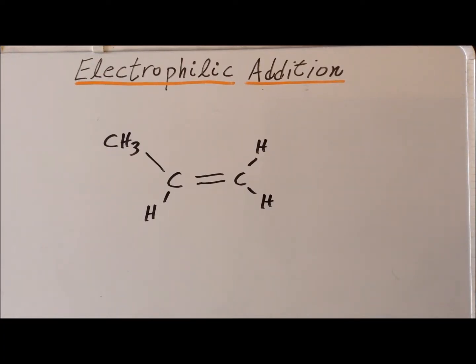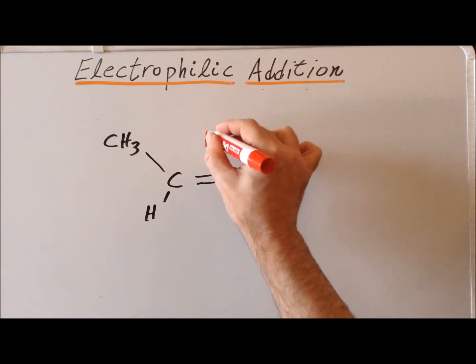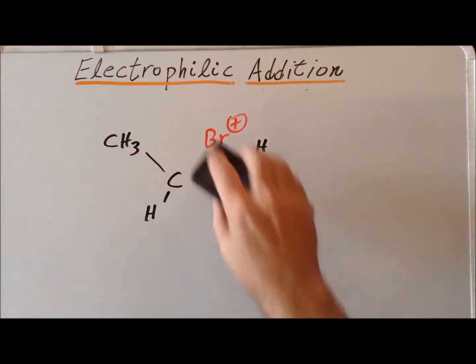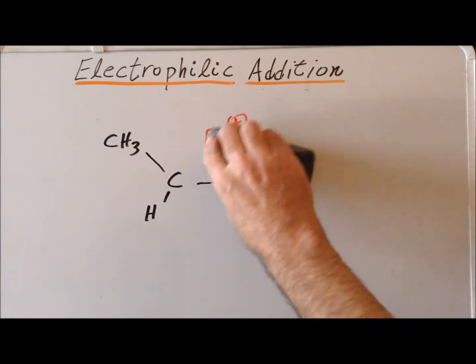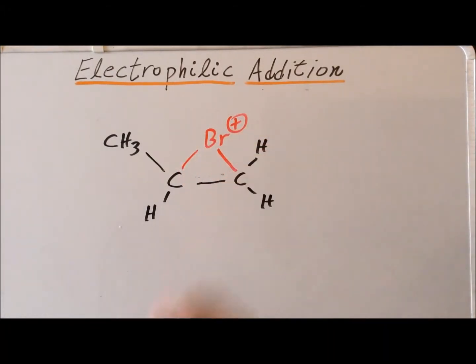An important issue arises whenever we have an asymmetric alkene, such as propylene, shown here. The first step in the reaction is the formation of a cyclic bromonium. So we have bromine plus adds to the double bond, and we convert the carbon-carbon double bond into a single bond, and we have sigma bonding of the bromonium to each of the two carbons.